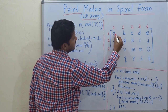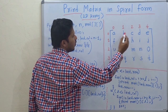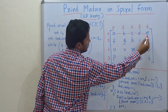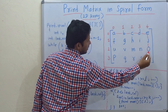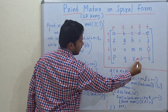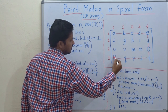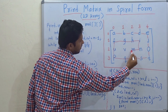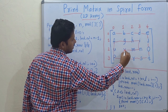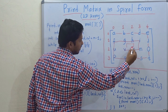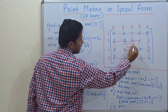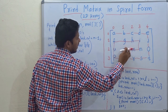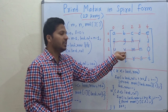I will draw it here. The spiral form is A, B, C, D, E, then J, O, T, S, R, Q, P, U, F, G, H, I, N, M, V and here it will end. If there is an inside matrix, then it will go to that inside matrix and again print spirally. But as this is the last inner matrix, so this is the end. It will end at V.